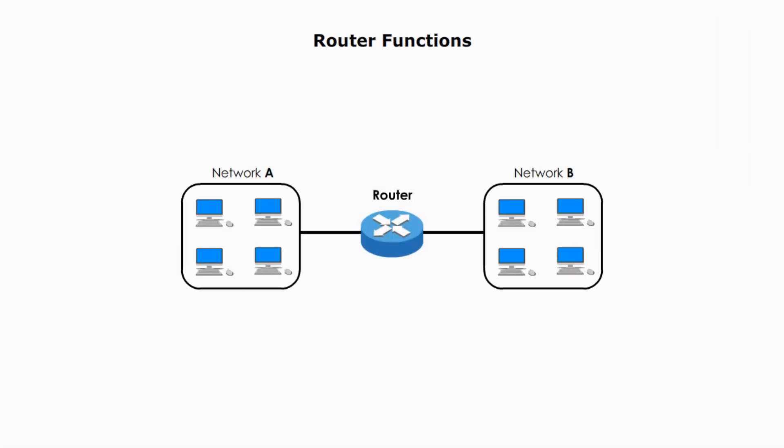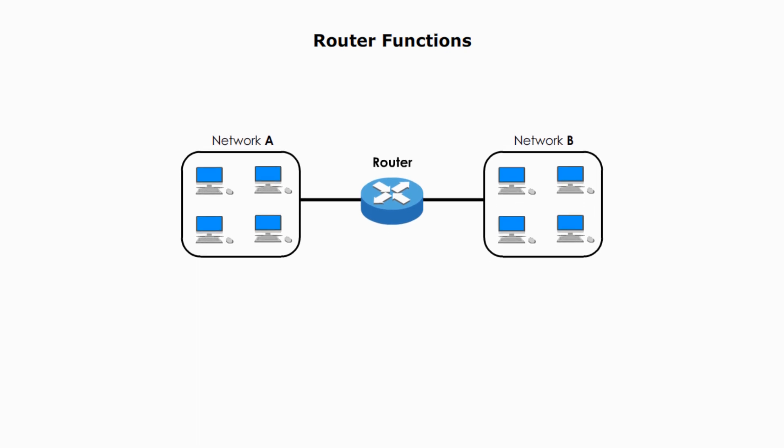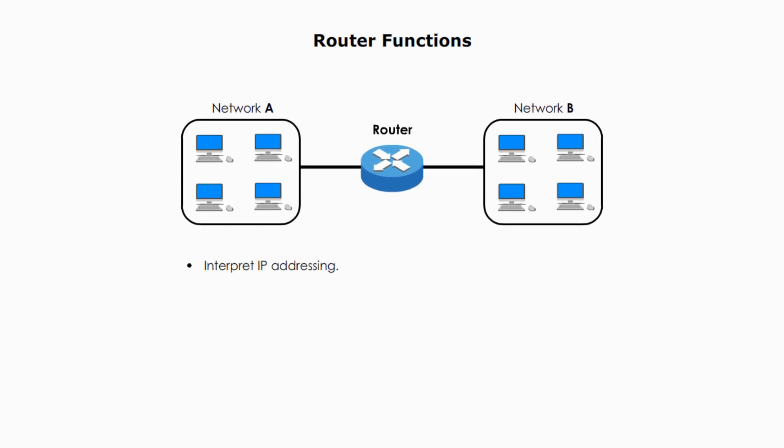What are the functions of a router? First and most important, routers deal with IP addressing. A router delivers data based on IP addresses. Second, a router can determine the best path for data to travel between two networks. Routing protocols are used to calculate the most efficient pathway.